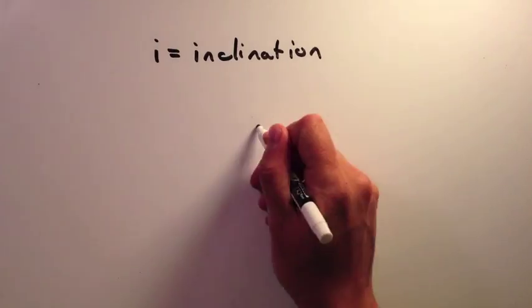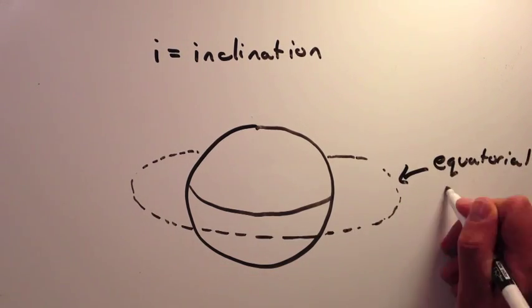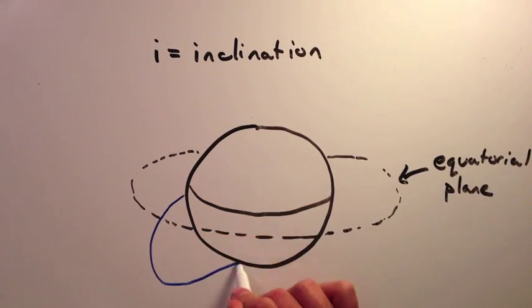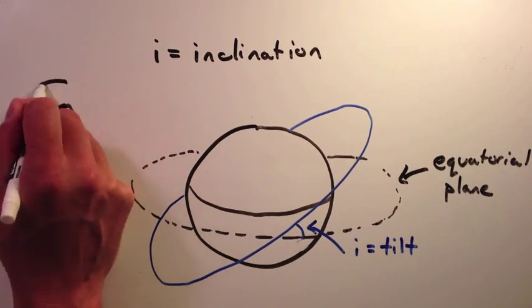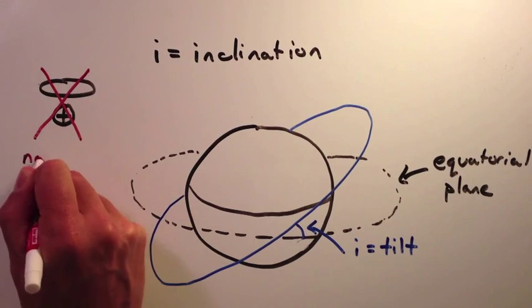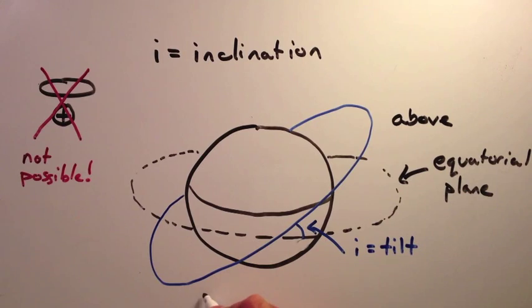I is the inclination of the orbit. This parameter describes the tilt of the orbital plane. When a satellite orbits the Earth, its orbit is always balanced about the center of the Earth. It's not possible for the satellite to travel in a halo pattern as depicted here. Instead, if the orbit is tilted, it will spend a certain amount of time above and below the equatorial plane.